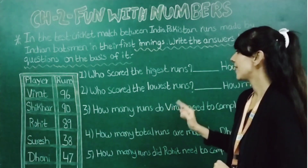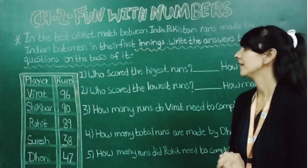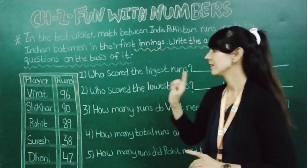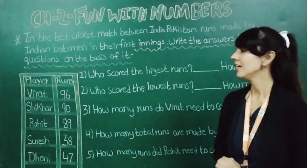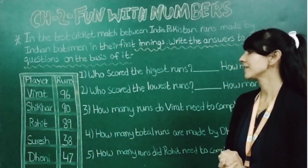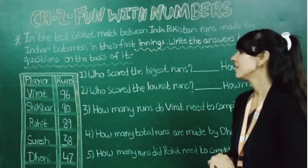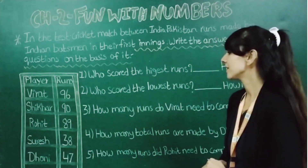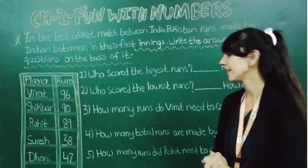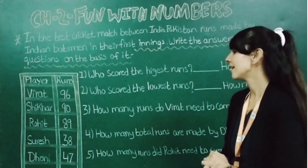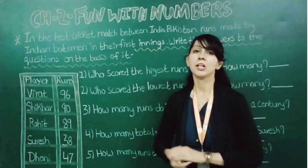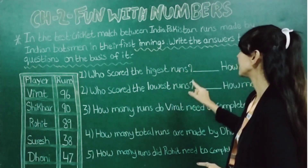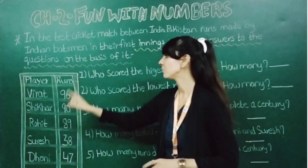First question is: who scored the highest runs? As you can see according to this information, Virat has scored 96 runs, Shikhar has scored 90 runs, Rohit has scored 89 runs, Suresh has scored 38 runs, and Dhoni has scored 47 runs. Now in question number 1, who scored the highest runs — the answer is Virat.